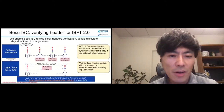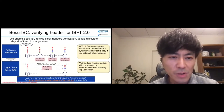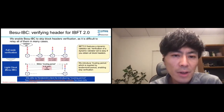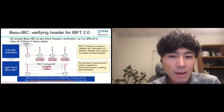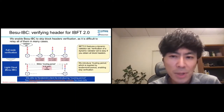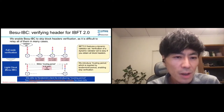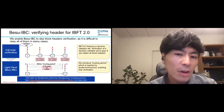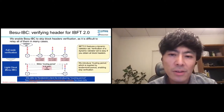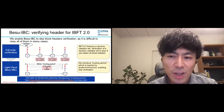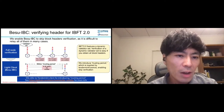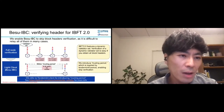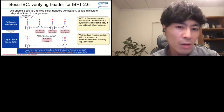We introduce a trusting period inspired by Tendermint and Cosmos. Here, we have four validators A, B, C, and D for a validator block header. Then another block header with validators A, B, D, F is received. If the interval between these two blocks is within the trusting period, we can say A, B, and D are trusted, thus skipping verifications of these three validators. We think this is a reasonable assumption and convenient for lightweight verification. Please refer to our documentation for details.